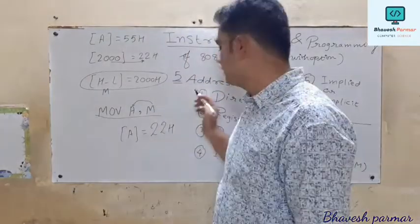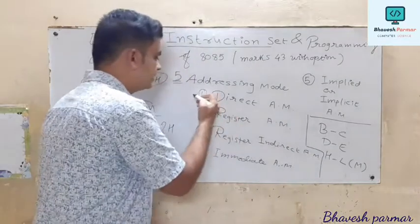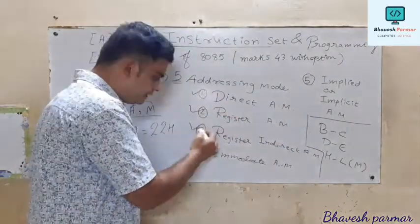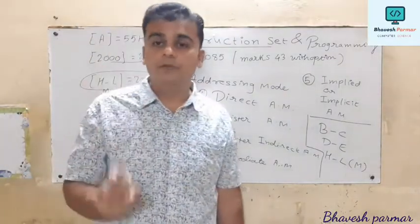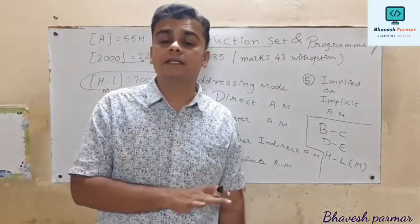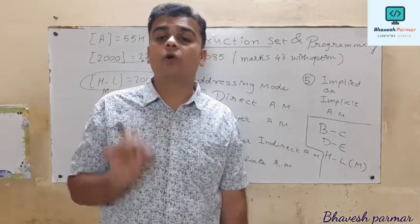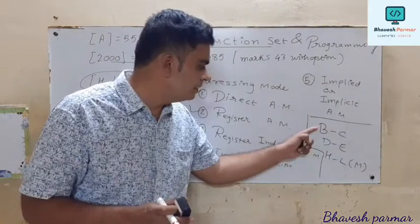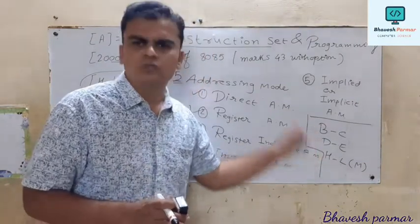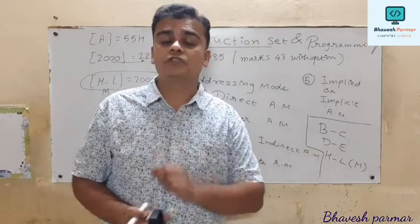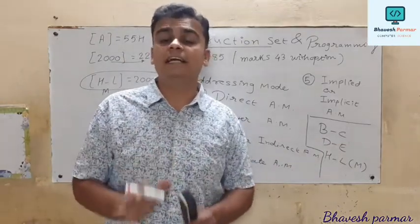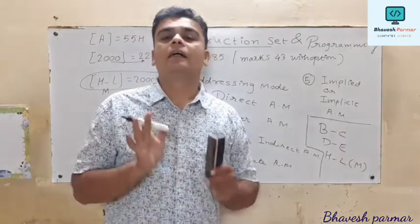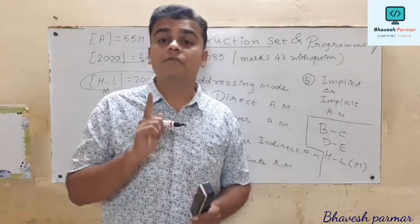To summarize register indirect addressing mode: if the operation is carried out on any register pair (BC, DE, HL), then it is register indirect addressing mode. It is always a 1-byte instruction because no 8-bit data and no 4-digit address appear directly in the instruction.